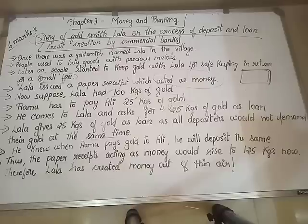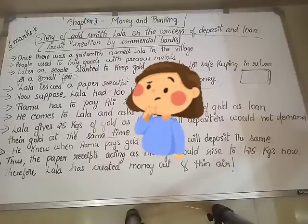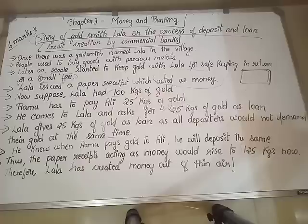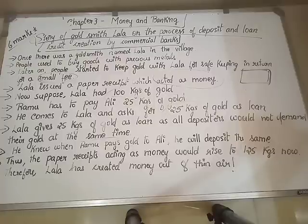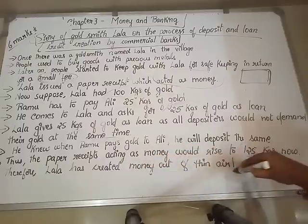Thus the paper receipts acting as money would rise to 125 kgs. So the total paper money circulating in the economy increased to 125 kgs. In reality, Lala only had 100 kgs of gold, yet he issued receipts worth 125 kgs — increasing the money supply. When Ali deposited that 25 kgs back, Lala gave another receipt. So 125 kgs worth of paper money was circulating in the economy. This is what we call creating money out of thin air. Therefore Lala has created money out of thin air.